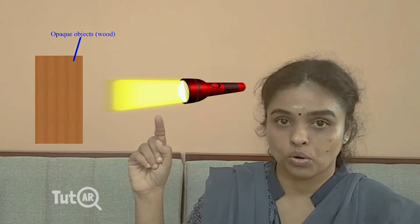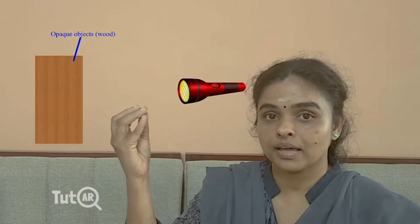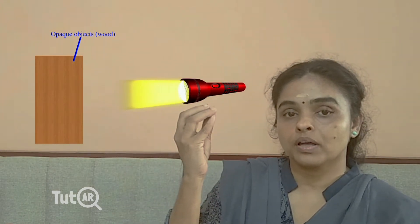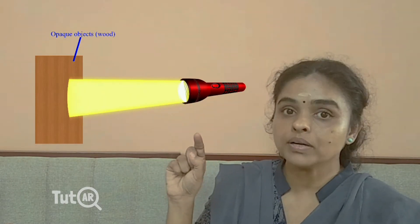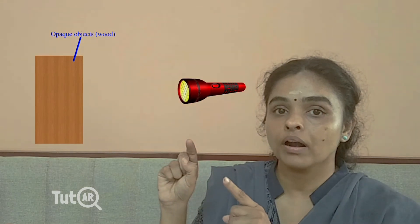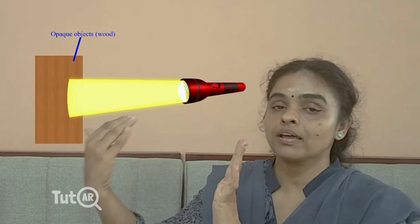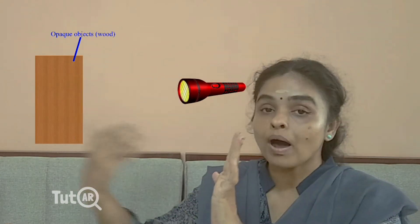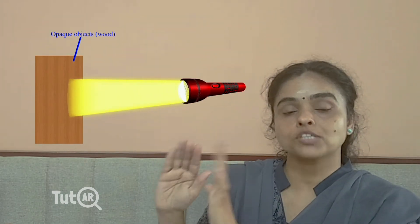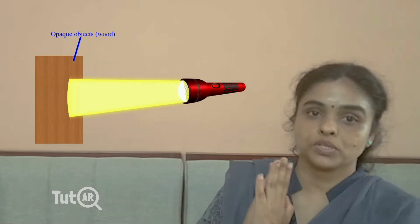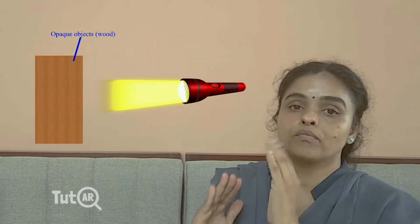We can see how an opaque object works. Here a source of light approaches a piece of wood — you can see that the light rays are blocked. They never enter; the light rays can't pass through them. They are blocked. Such materials are known as opaque objects.